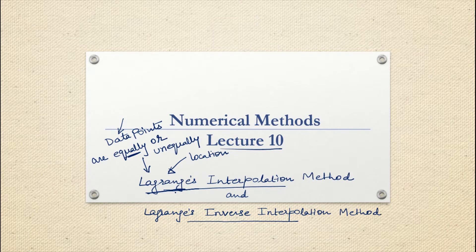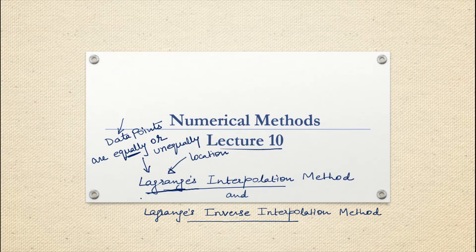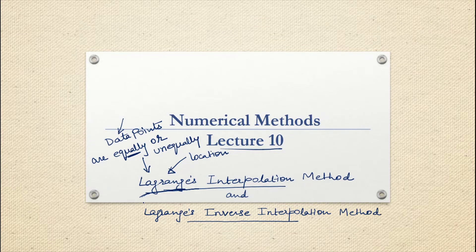We generally use Newton's interpolation method only, because Newton's interpolation method is computationally fast and we can even add more data points in that method. If we manually do the calculation using Lagrange's formula, the chances of errors in the calculation are higher. Practically, Newton's interpolation method is much more used, but we have to study Lagrange's interpolation method also — it's always better to have more than one method to solve any question.